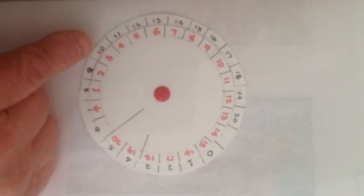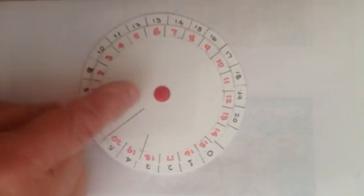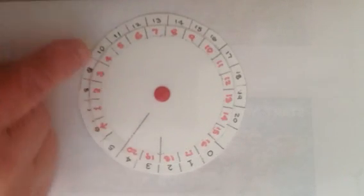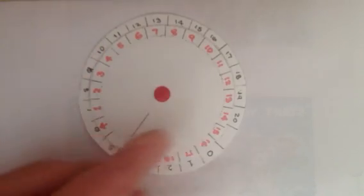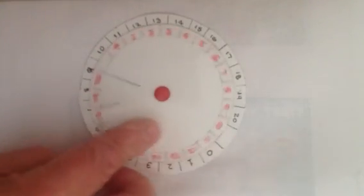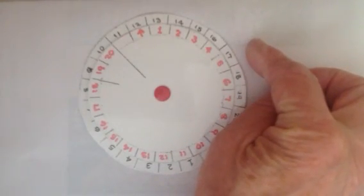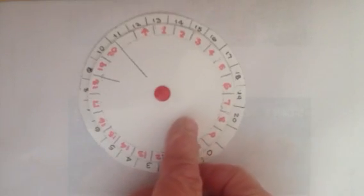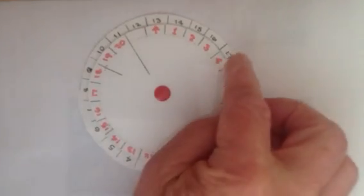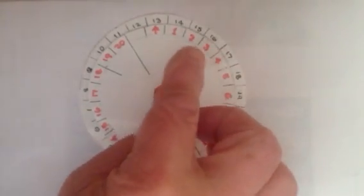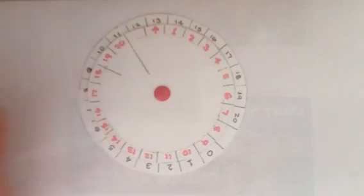10 minus 4 equals 6. A bit further round. We go to 17 on the outer ring. Take away 4 on the inner ring. 17 take away 4. Go back to the arrow. Gives us 13.